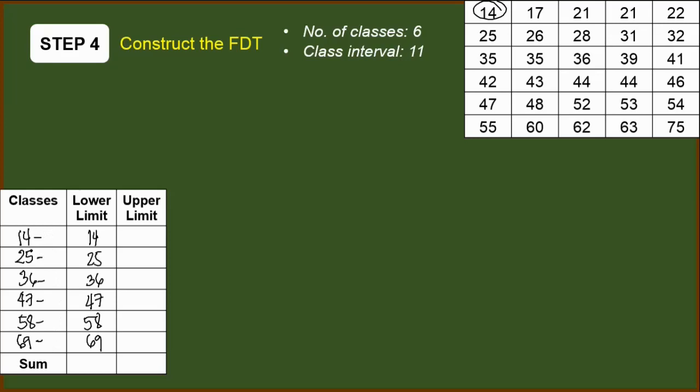For this part, we will just be identifying the integer before 25, which is 24. The integer before 36, which is 35. Before 47, which is 46. So if you may notice, from 24, we also add 11 to get 35. 35 plus 11 is also 46. So this is basically the reason why we wrote this here, so that we will be reminded that the class interval is always 11. 46 plus 11, we have 57. It matches. After 57, we have 58. Next, we have 68.